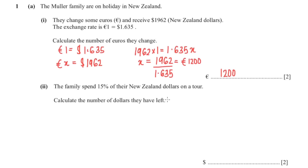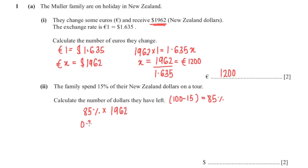The second question: the family spent 15 percent of their dollars on a tour, so they only have 85 percent left. Let's calculate 85 percent of their dollars, multiplied with 1962 because that is what they started with. Changing the percentage to decimal: 0.85 multiplied by 1962 gives an answer of 1667.70 New Zealand dollars.